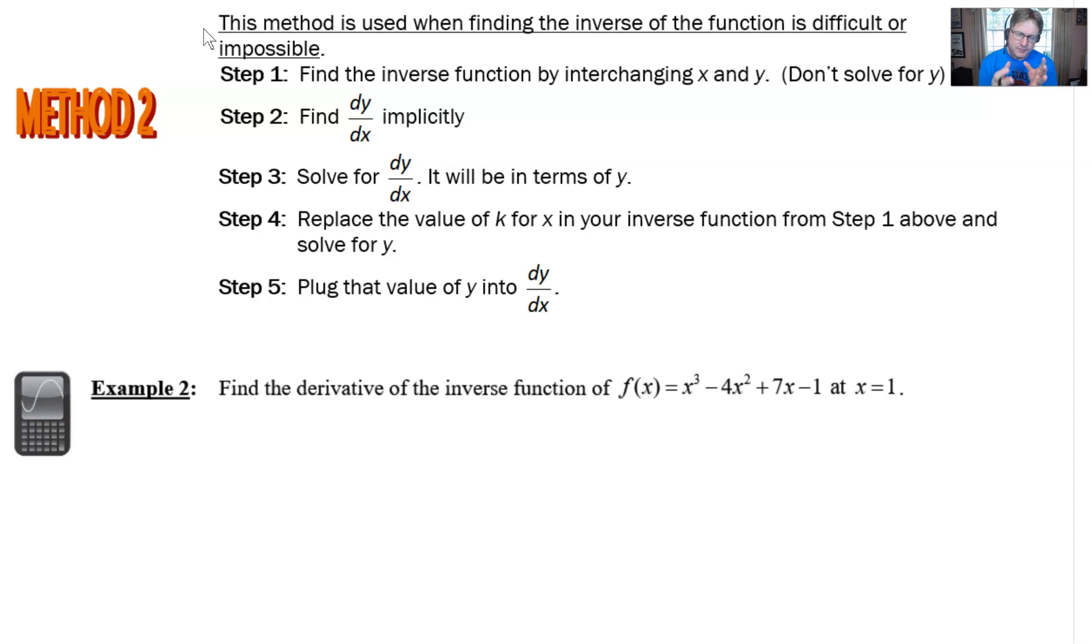I want to preface those words because finding the inverse is really never a difficult thing to do. You just switch the x's for y's, boom you've got your inverse. What I'm talking about here is finding the y value alone, rewriting that inverse so that y is by itself. Let's say that that is what we feel like is impossible with this problem. If you look at the example 2 really quickly before we outline the steps, we can see that if we want to find the derivative of this inverse function f(x) = x³ - 4x² + 7x - 1 at x = 1, we have got our hands full.